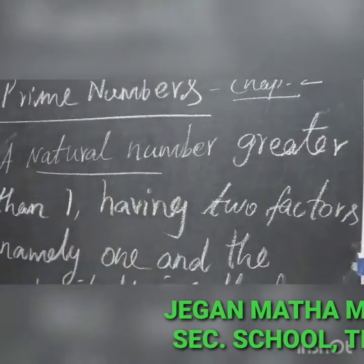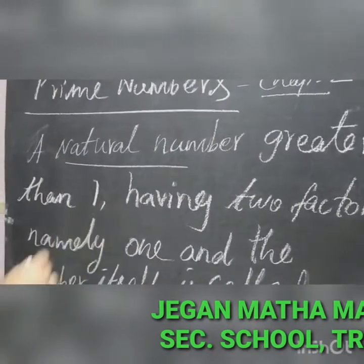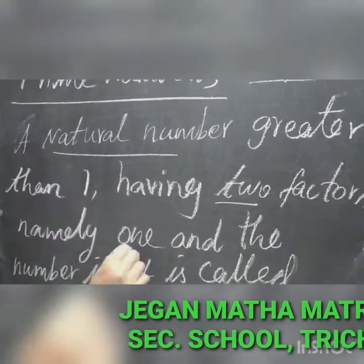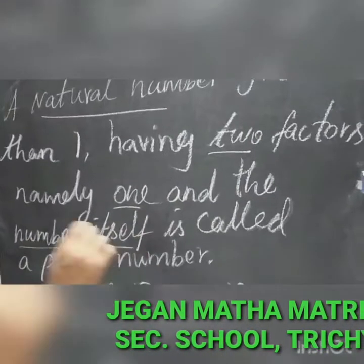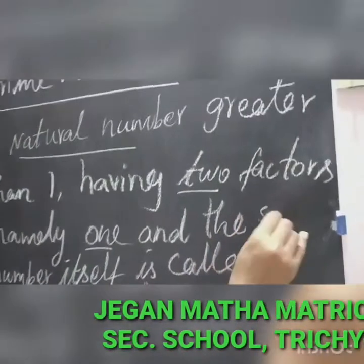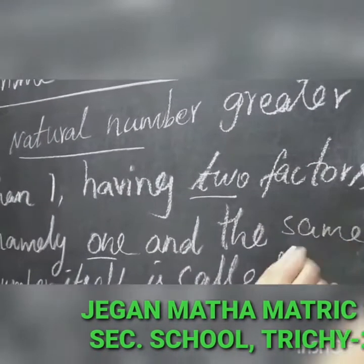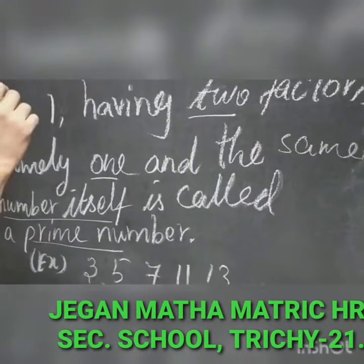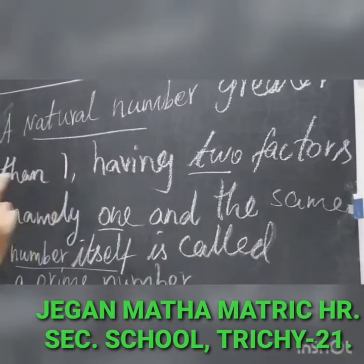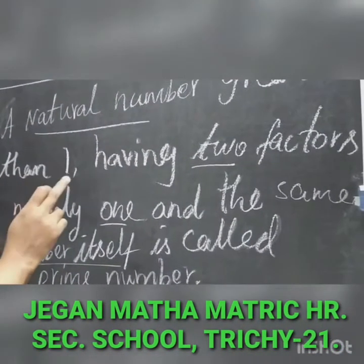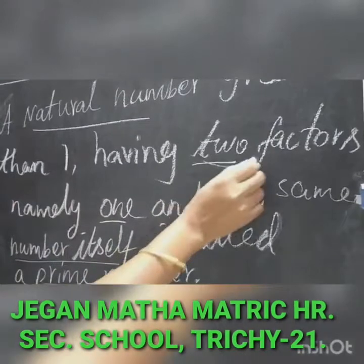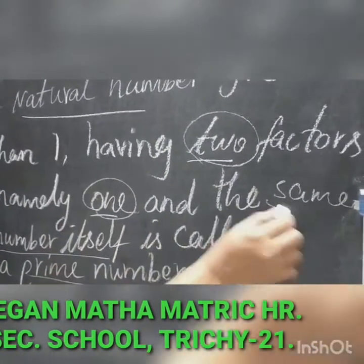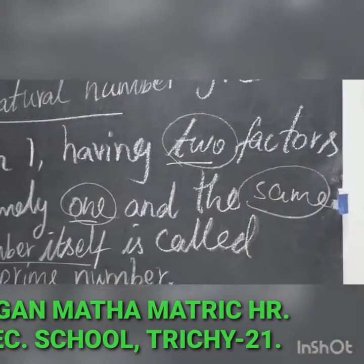A natural number greater than 1, having 2 factors — namely 1 and the same number itself — is called a prime number. You can take only natural numbers greater than 1 having only 2 factors. Those 2 factors are 1 and the same number itself.